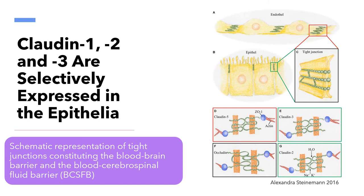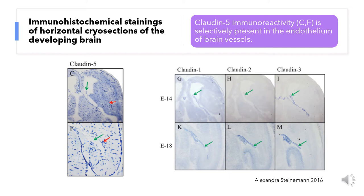Immunohistochemical stainings of horizontal cross-sections of a forming brain show that claudin-5 is selectively present in the endothelium of brain vessels, whereas claudin-1, 2 and 3 are mostly present in the epithelium of the choroid plexus.